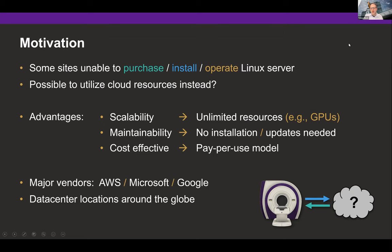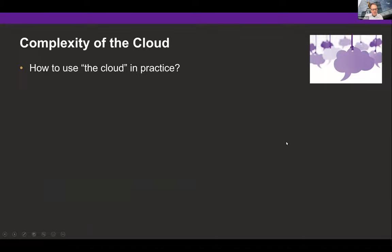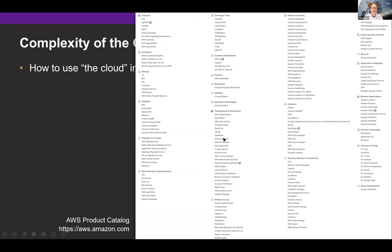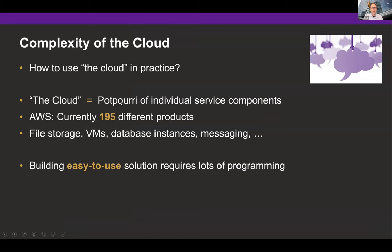In practice, if you go to the AWS website and look at which cloud products they offer, you'll find a very confusing and very long list of different cloud services. What the cloud really is is a potpourri of individual cloud-based service components — things like file storage, virtual machines, a database service, or a messaging service. In order to compose these services and build something that's really easy to use for the end user, you actually have to do quite a lot of programming work to put these different services together.